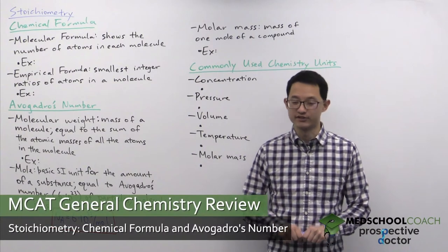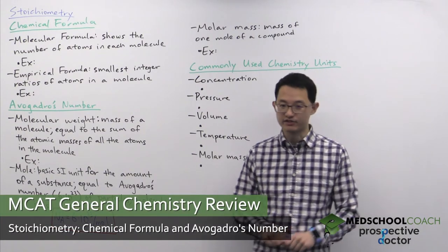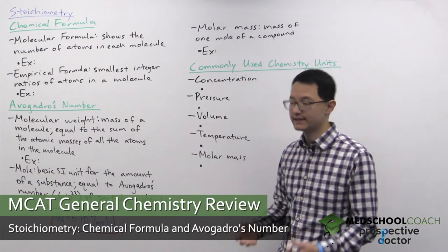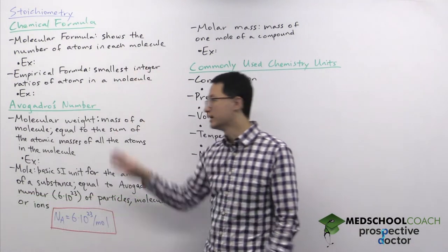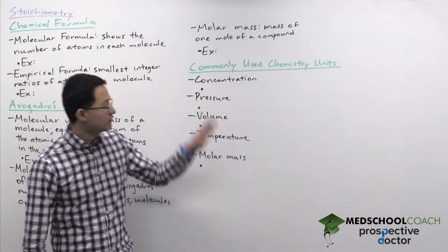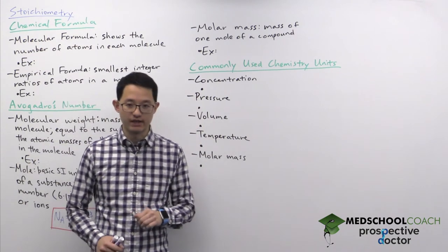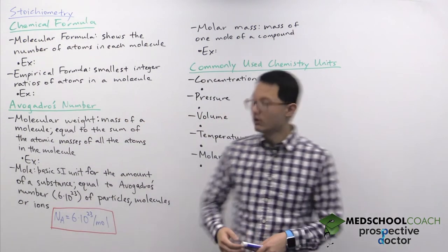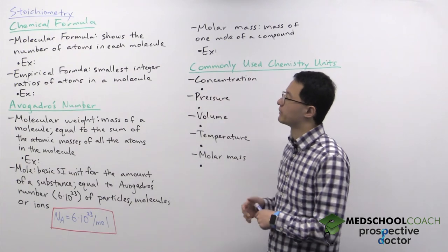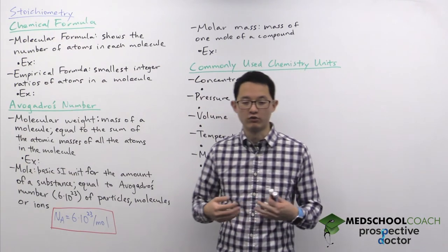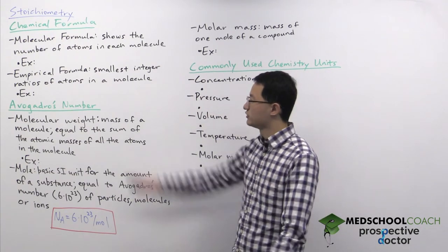In the next few videos we're going to go over stoichiometry. This video is going to start by going over some of the basics, so looking at chemical formula, Avogadro's number, as well as the units that are commonly used in chemistry. To begin, chemical formulas essentially are for compounds and there are two different types.